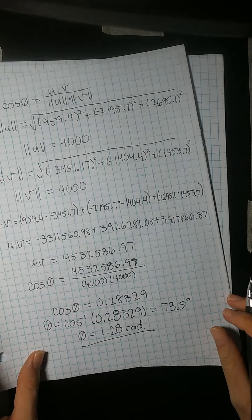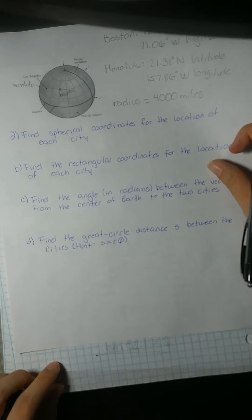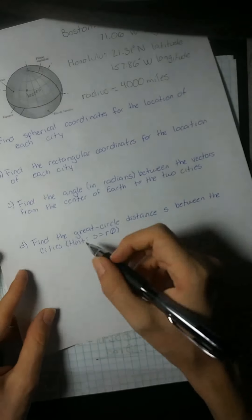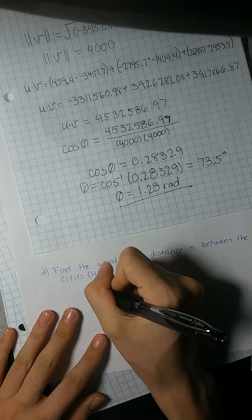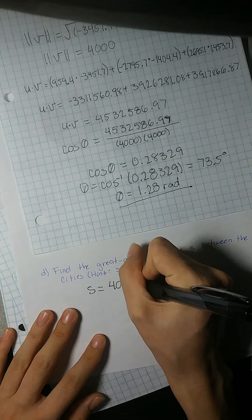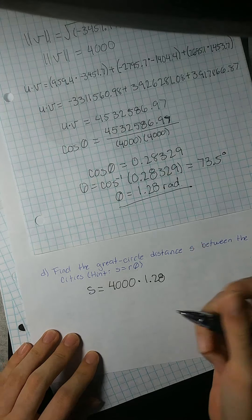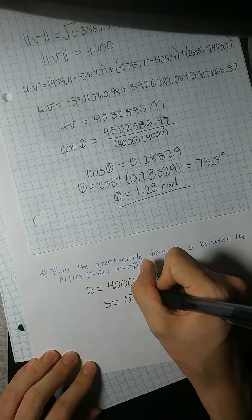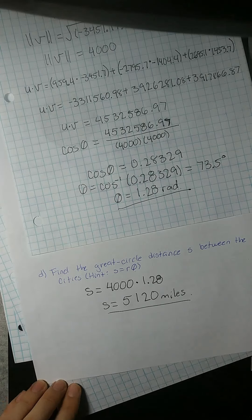For part D, we find the great circle distance S between the cities. Using the hint that S equals radius times the angle, we get S equals 4,000 times 1.28 radians, so S equals 5,120 miles.